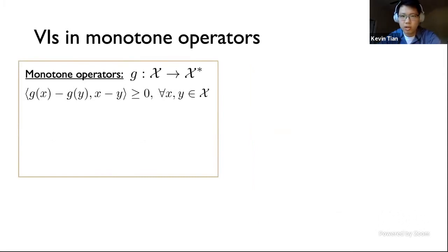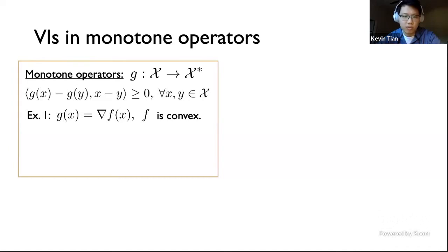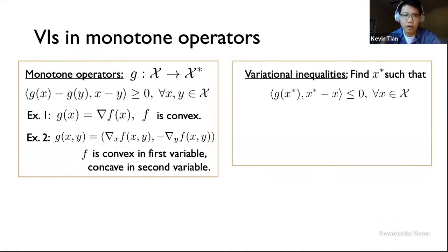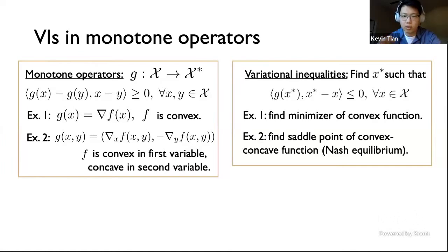A VI is parameterized by a monotone operator G from its set to its dual, which satisfies the monotonicity condition — informally forcing results of the operator on two points X and Y to be aligned with the direction between those points. We consider two examples: G as the gradient of a convex function, and G as the gradient operator of a convex-concave function on two blocks. Solving a VI in monotone G asks to find X star such that the inner product between G of X star and X star minus X is non-positive for any X in the domain — which amounts to minimizing a convex function, or finding a saddle point in the convex-concave case.